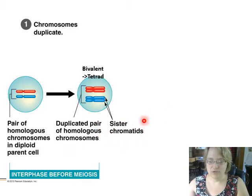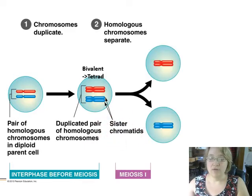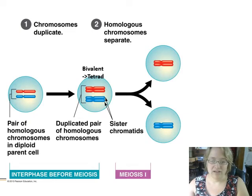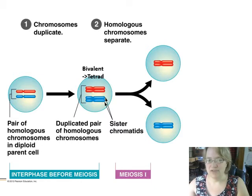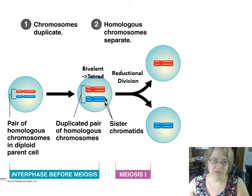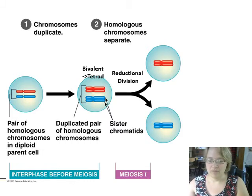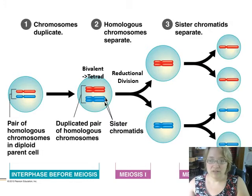In meiosis one, the homologous chromosomes are separating. Each has two sister chromatids. This cell is actually haploid even though it has two copies — they're identical copies, not two sets of the same chromosome, just one chromosome duplicated. So during meiosis one we're undergoing reductional division, going from 2n to 1n, from diploid to haploid, in this first split.